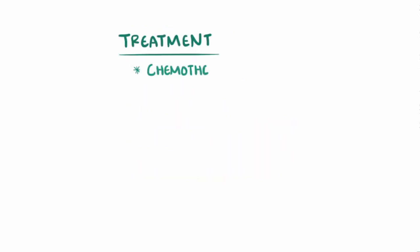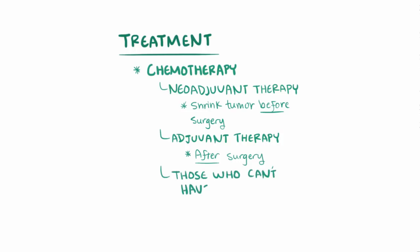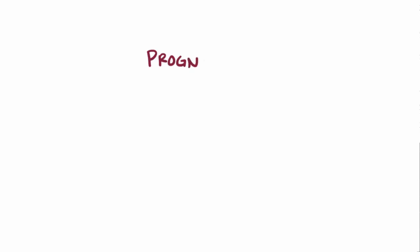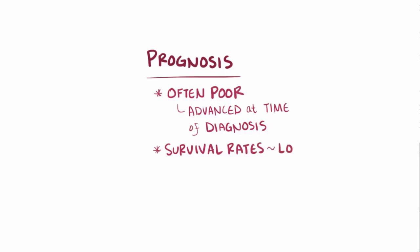For treatment, chemotherapy might be given as a neoadjuvant — meaning used to shrink the tumor before surgery — or as an adjuvant therapy after surgery, or to help individuals who can't have surgery at all. Unfortunately, most people with pancreatic carcinoma have a poor prognosis because it's typically pretty advanced at the time of diagnosis. Even among patients with stage 1 pancreatic carcinoma, the long-term survival rates are pretty low.